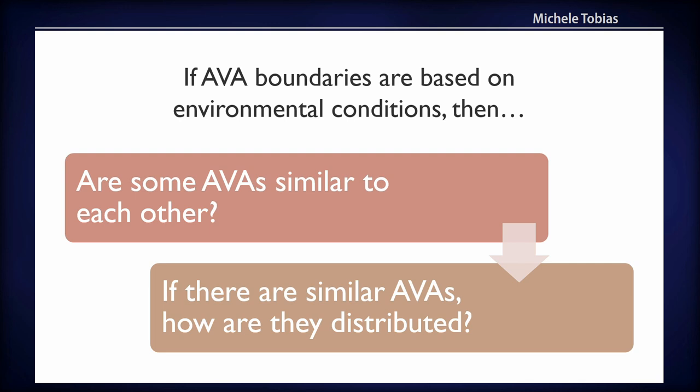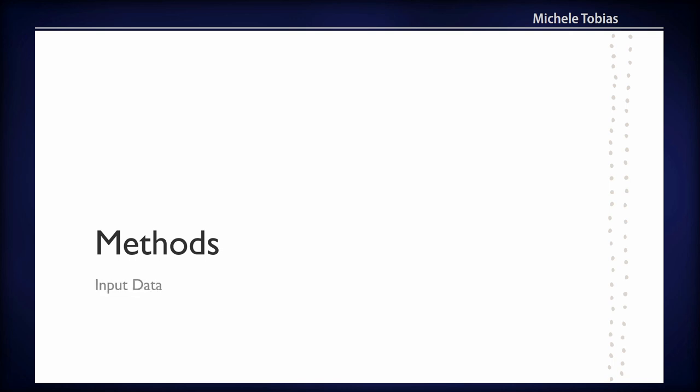You might expect that if some AVAs are near each other, they might have similar environmental conditions, and if we do a cluster analysis they might group together. And if that's the case, are the similar AVAs actually geographically clustered or not? That's the question I undertook with this project.